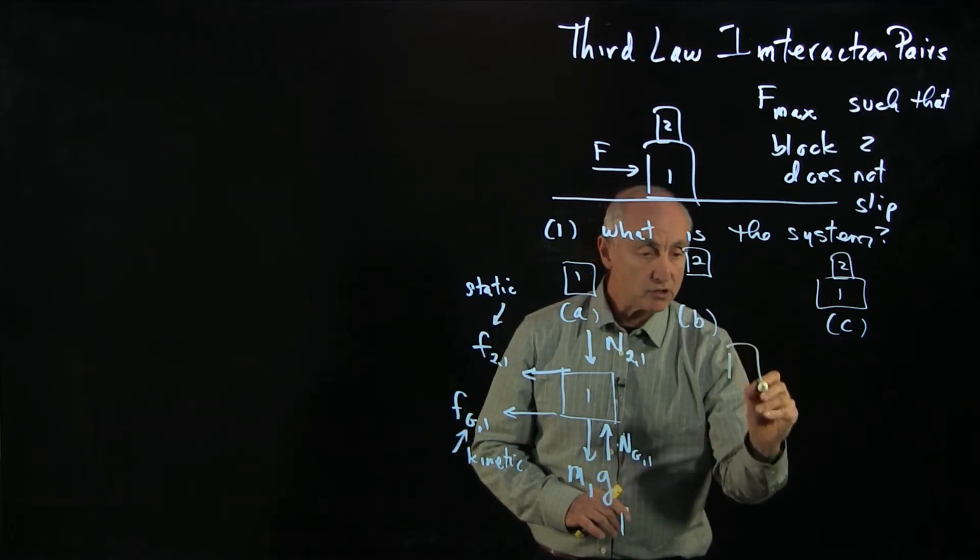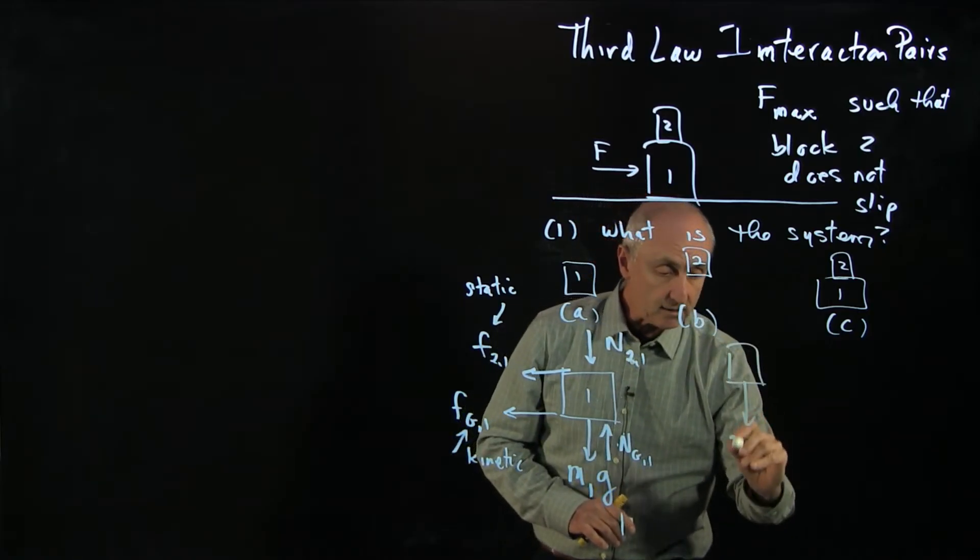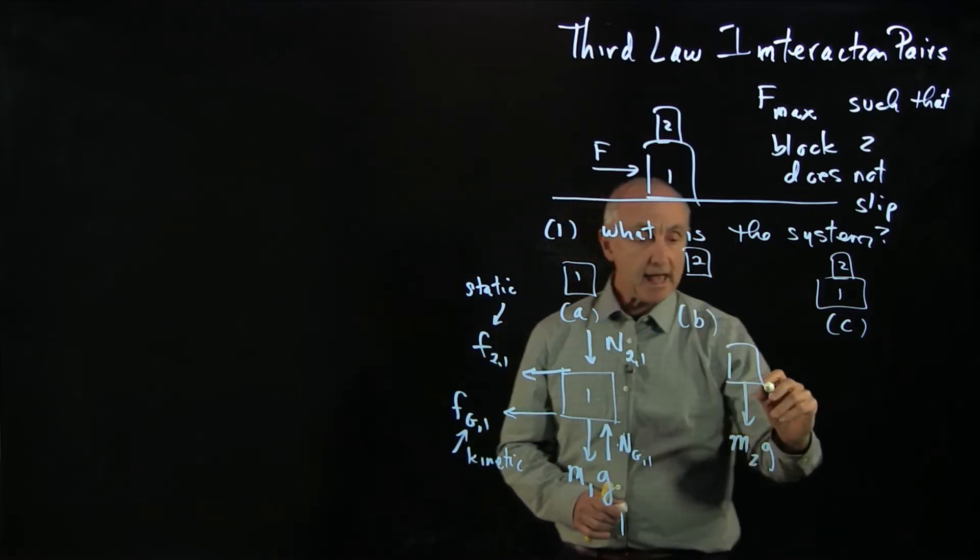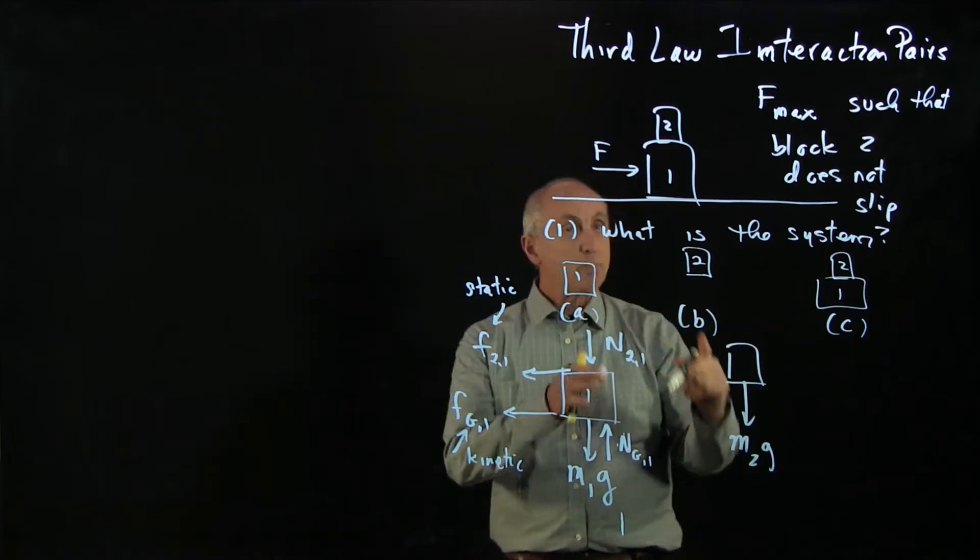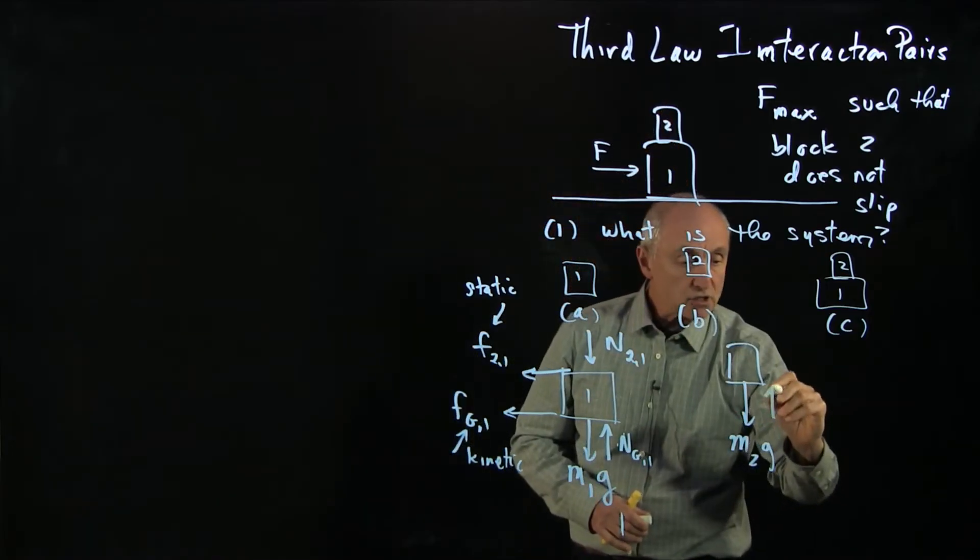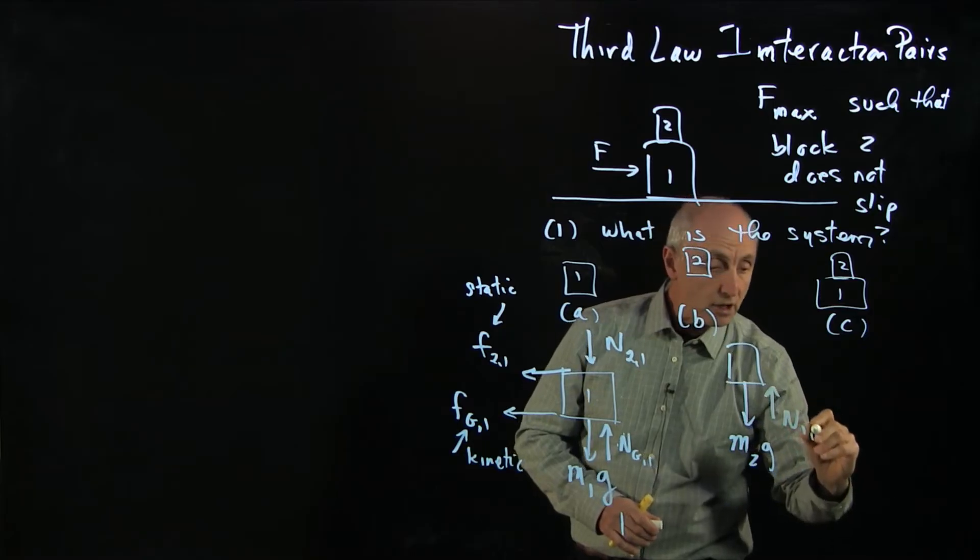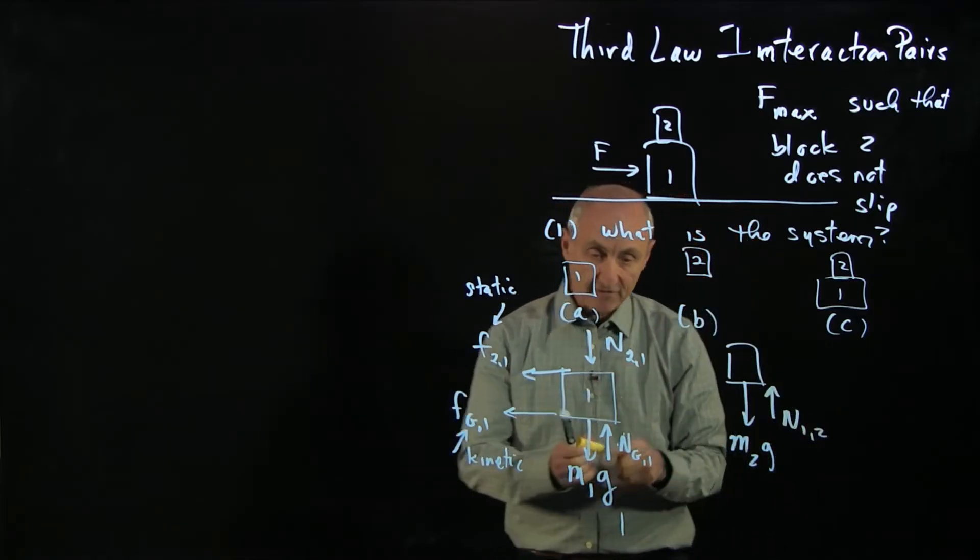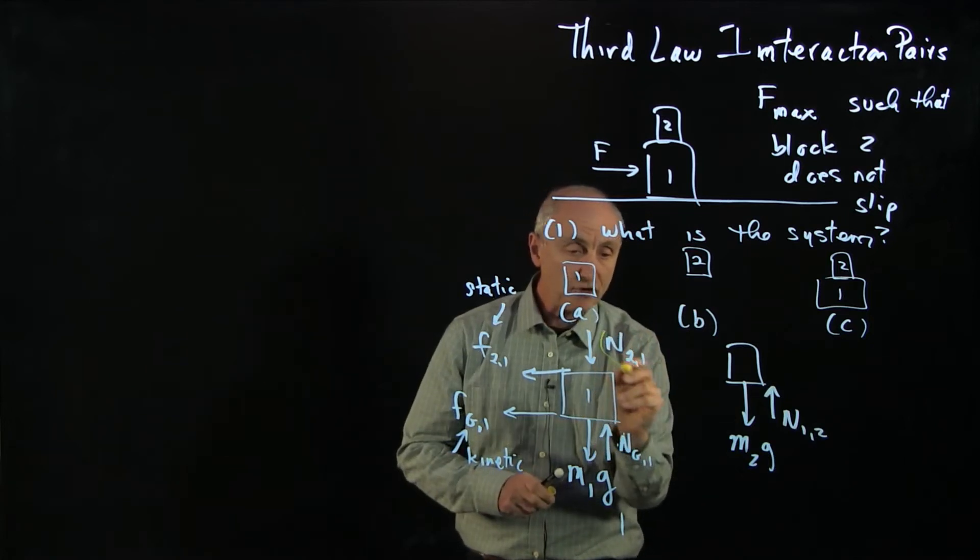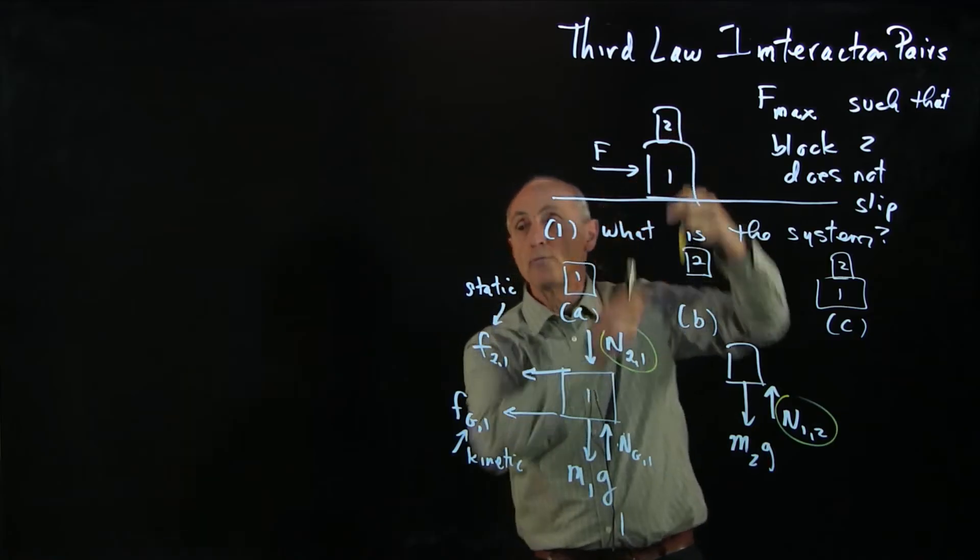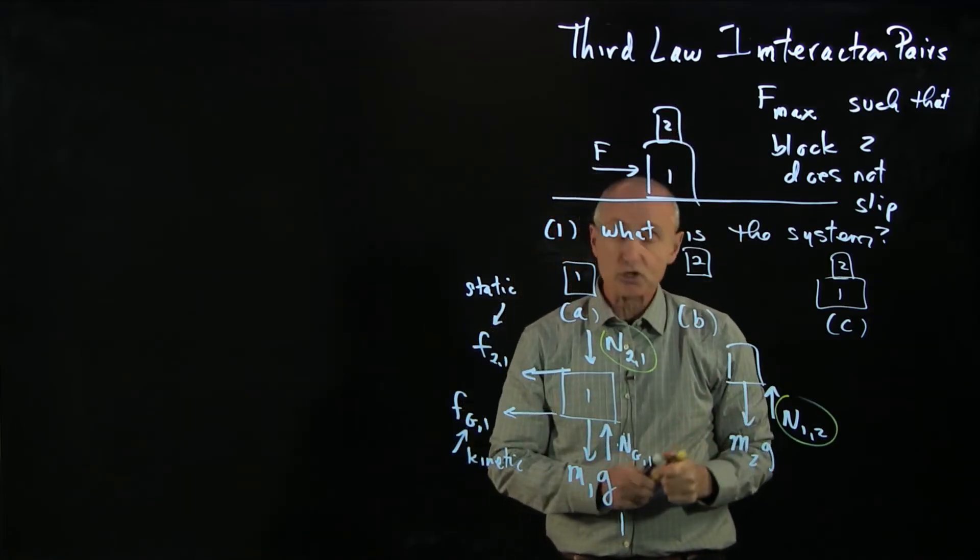So let's draw two. Well, again, m2g, the Earth, is the other element of the interaction pair. And now block one is pushing block two up. So we have block one pushing block two up. And notice our indices make it very easy to see that our first Newton's third law interaction pair is the normal force of contact between the two blocks.